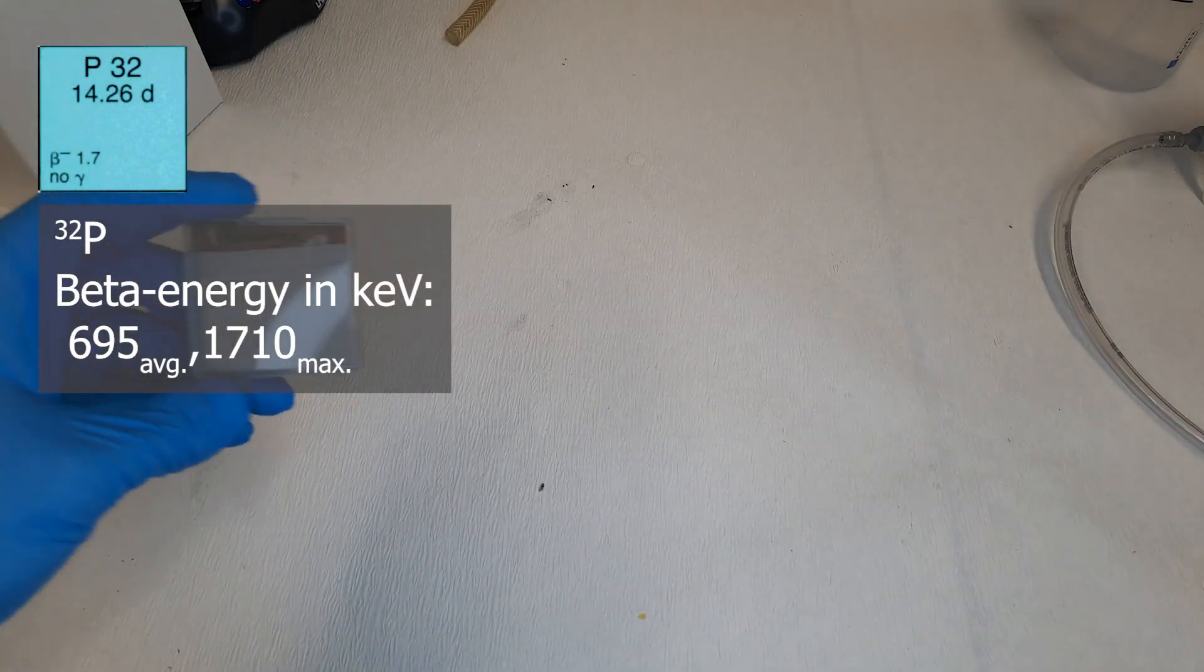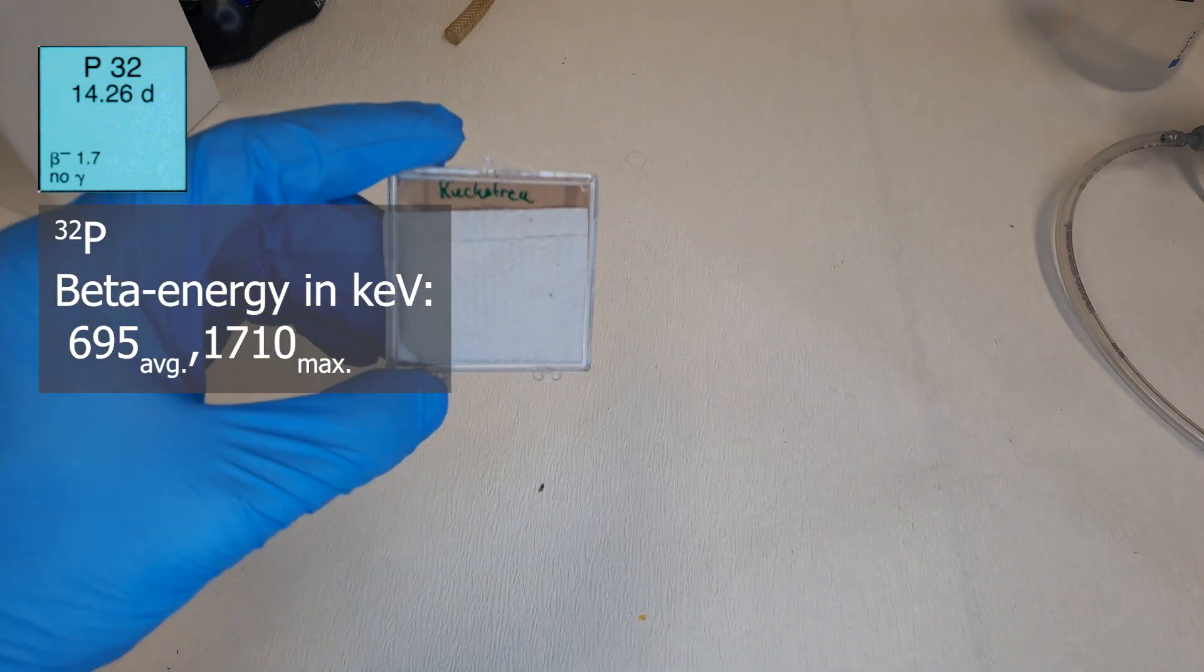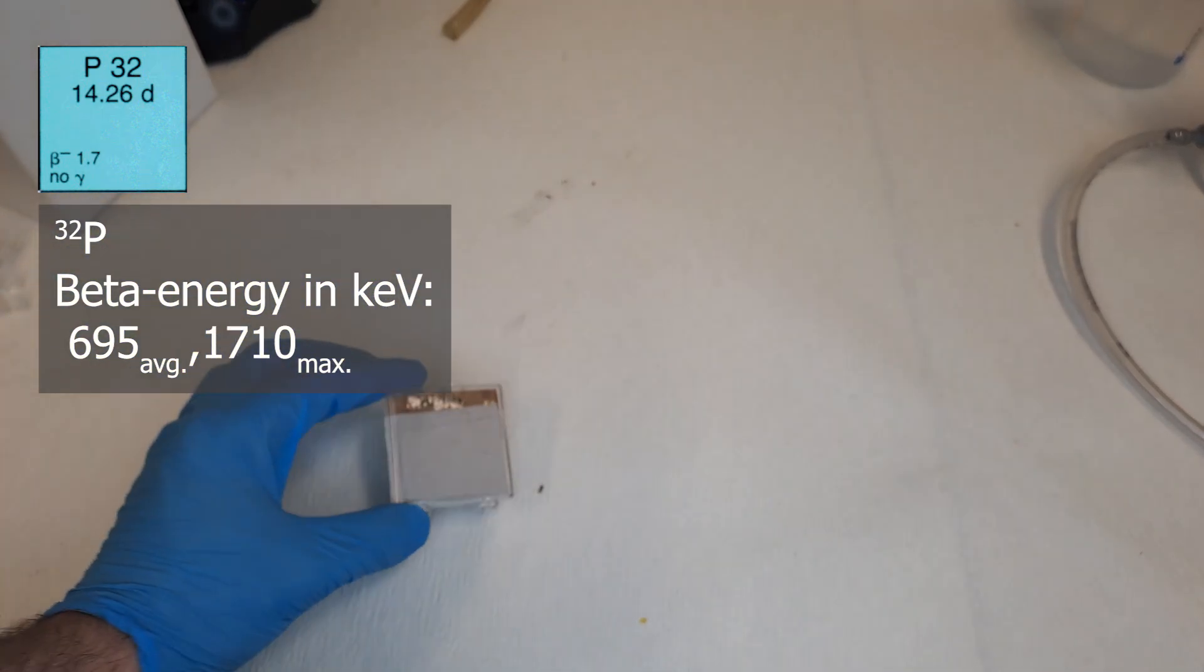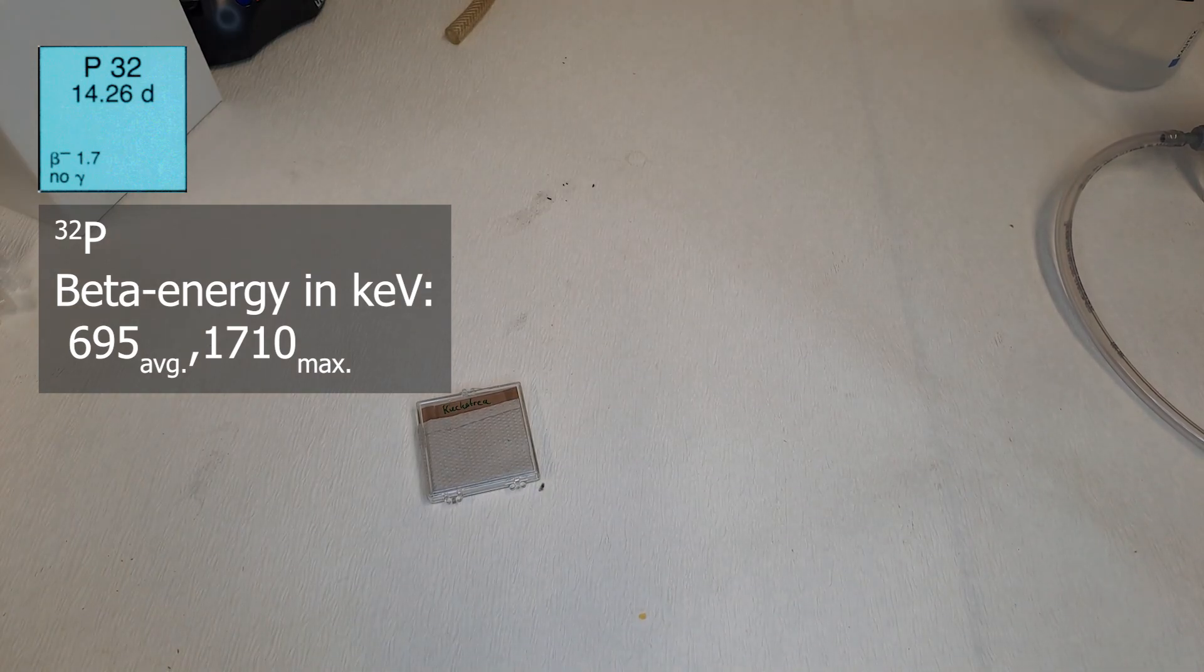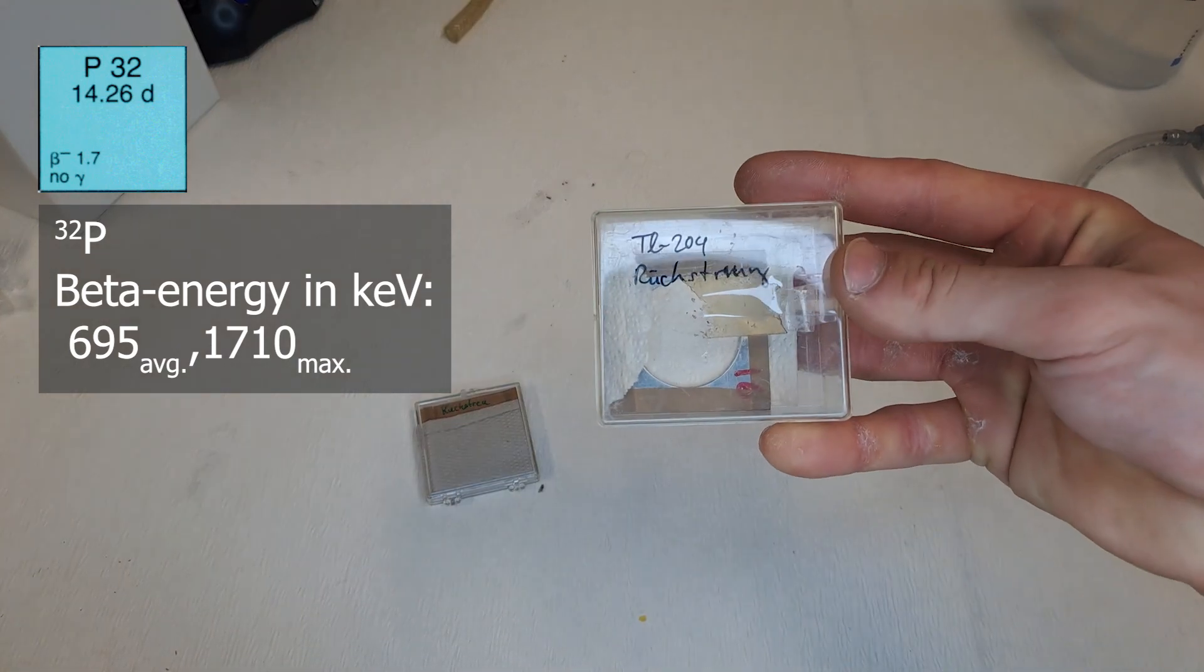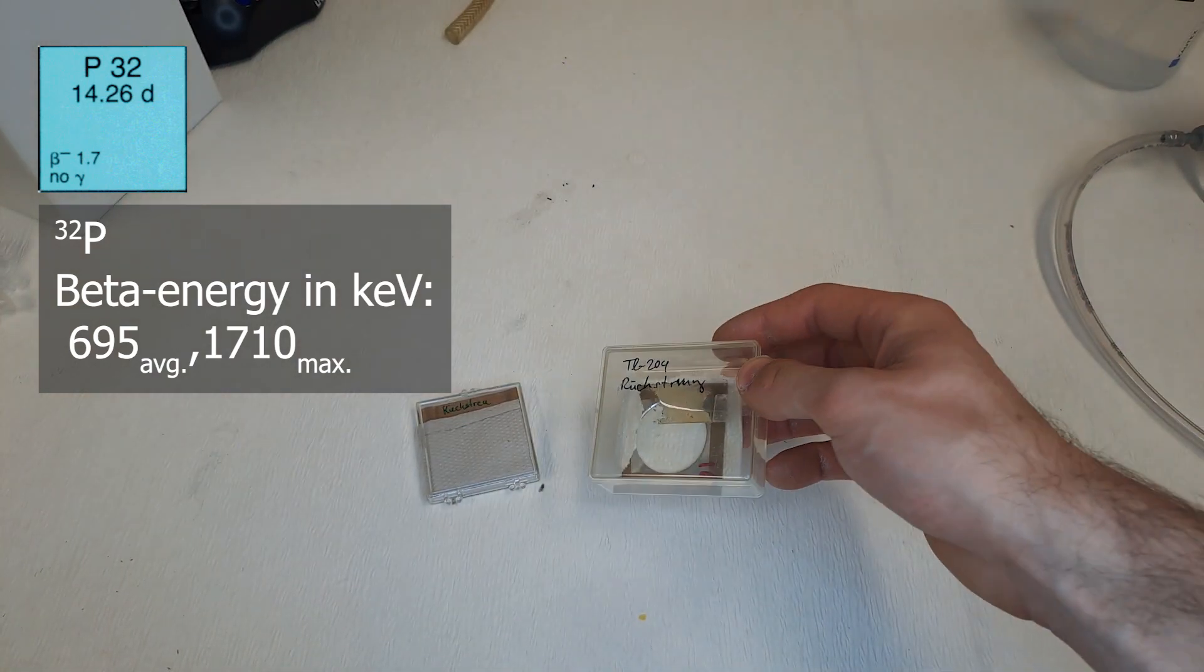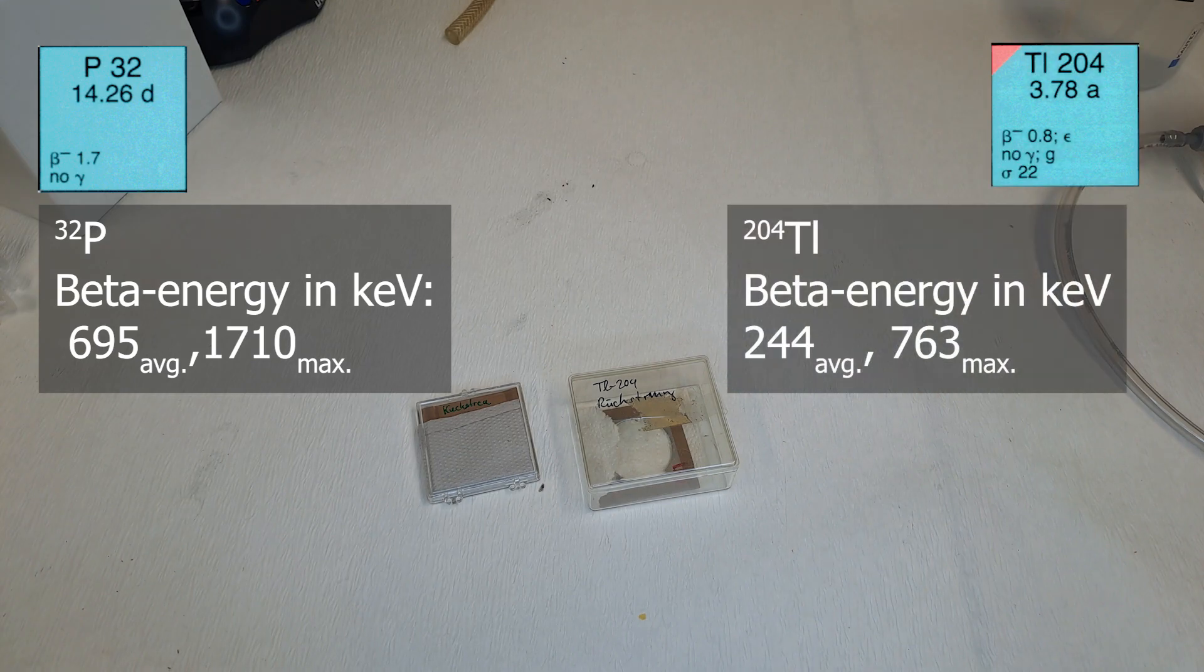Now we have a high-energy beta-only source in the form of phosphorus-32. Average is 695 kiloelectron volts and maximum is 1710 kiloelectron volts, and a low-energy source in the form of thallium-204. Average is 244 kiloelectron volts and the maximum is 763 kiloelectron volts.